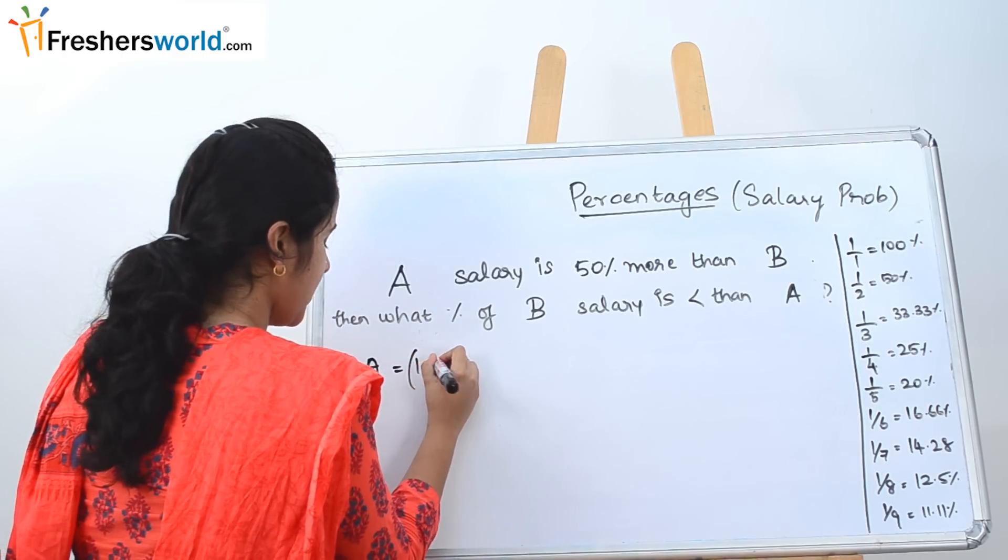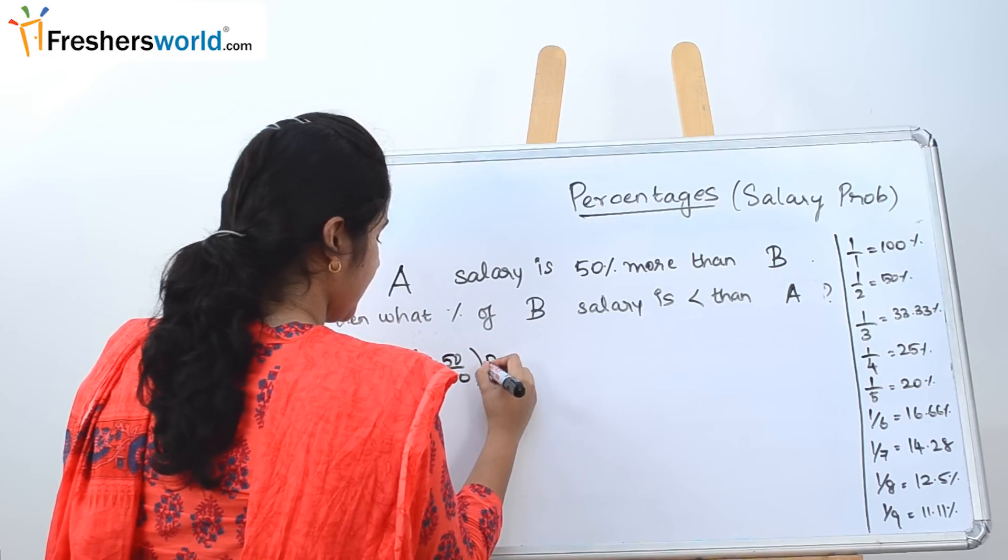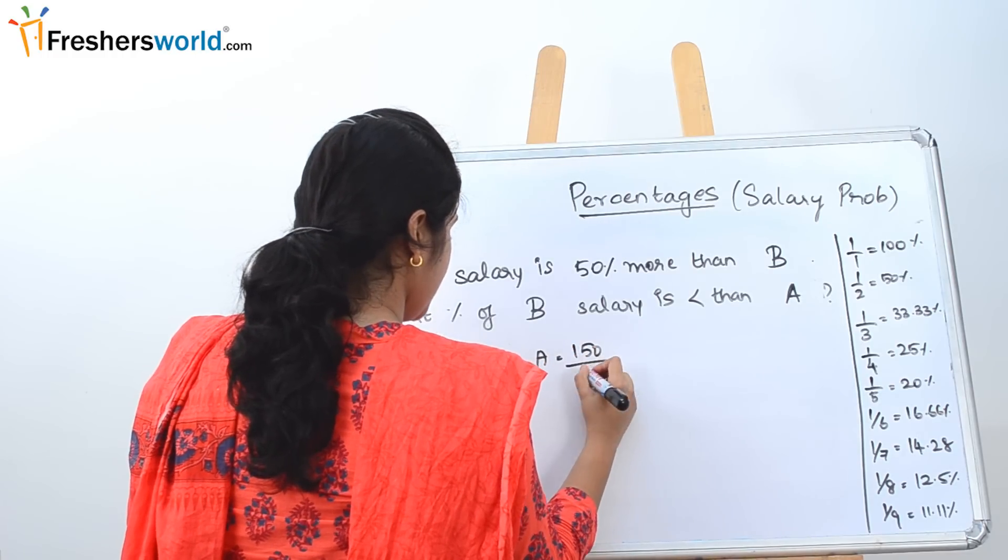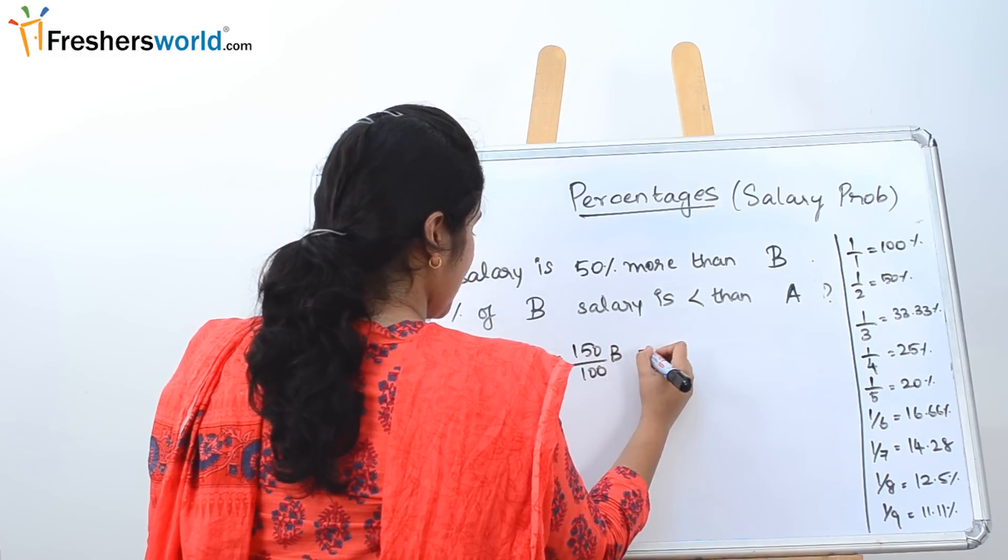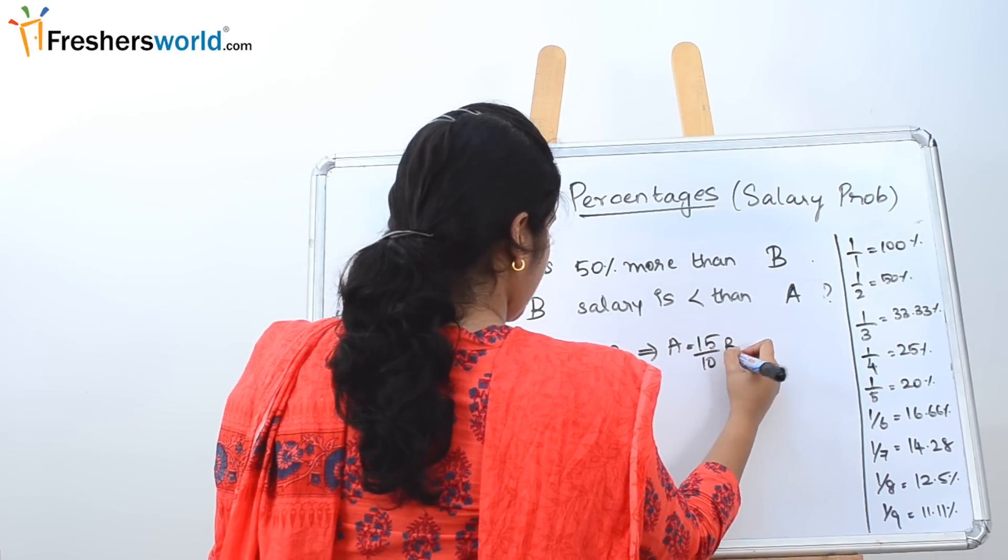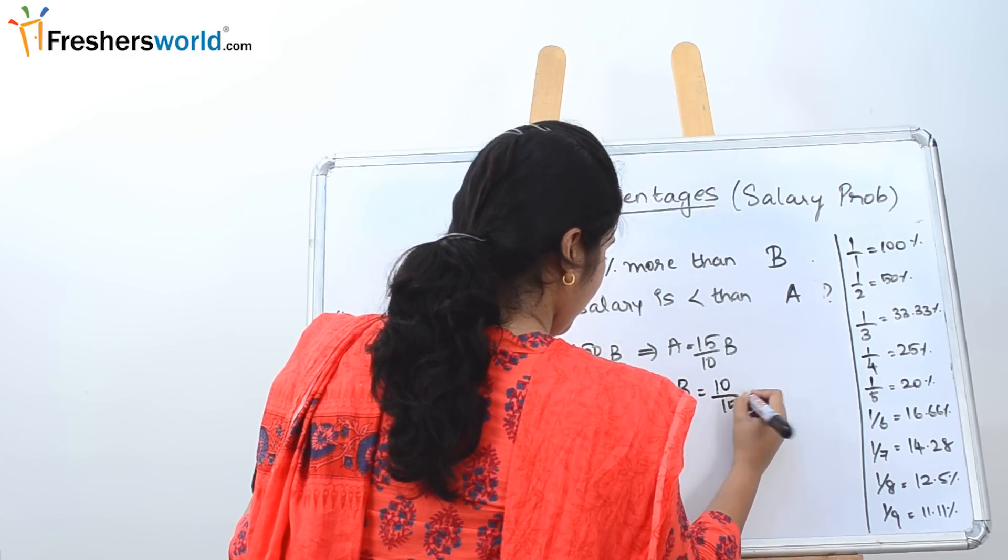This is nothing but 1 plus 50 by 100, which is nothing but of B. So A is equal to 150 by 100 of B, which can be rewritten as A is equal to 15 by 10 of B. This can also be written as B is equal to 10 by 15 of A.